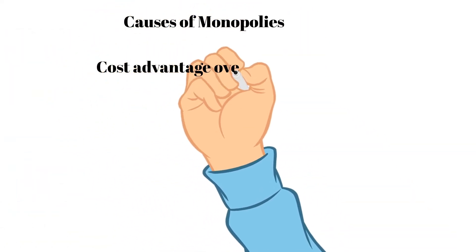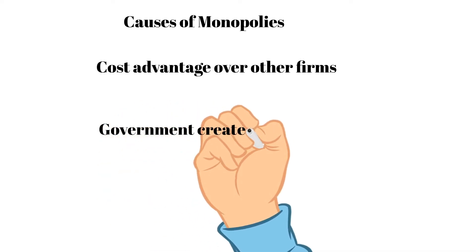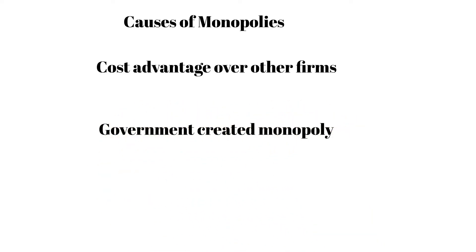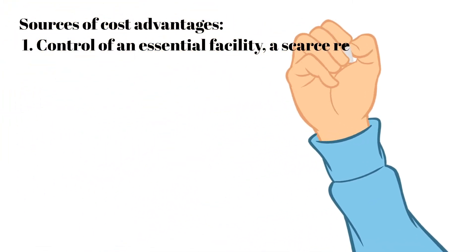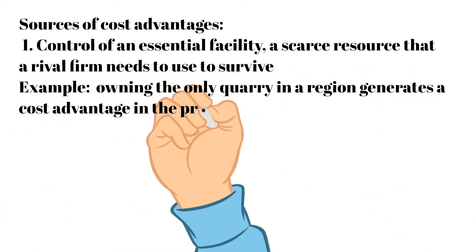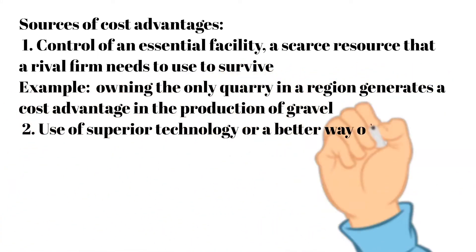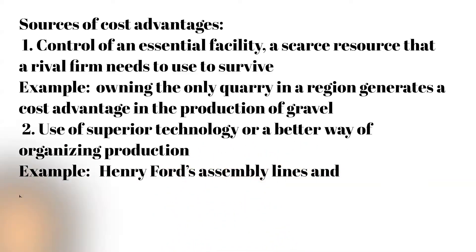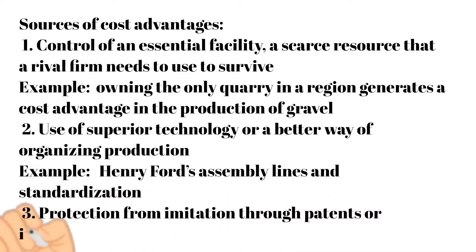Why are some markets monopolised? Two key reasons are that a firm has a cost advantage over other firms or the government created the monopoly. A firm can have a cost advantage over potential rivals because it has an essential facility, a superior technology or organisation, or it is a natural monopoly.